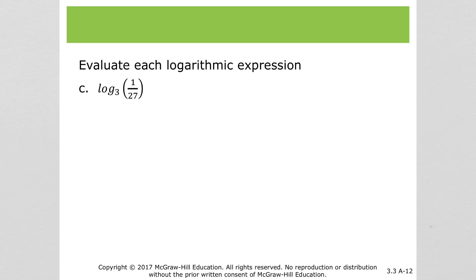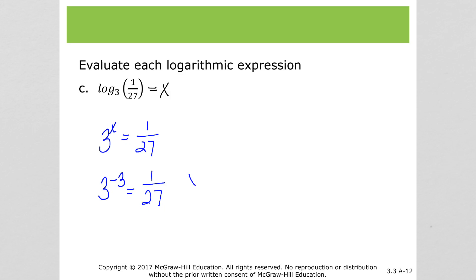Next, we can say equals x again — it helps to see a little bit. So 3 to the x is equal to 1 over 27. What would 3 to the what power give us 1 over 27? Well, if we have a negative exponent that's going to put it on the bottom, and 3 cubed gives us 27. So it would be 3 to the negative 3, which gives us 1 over 27. So x must be negative 3.